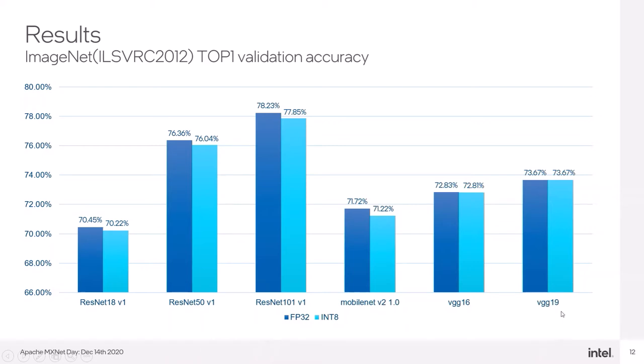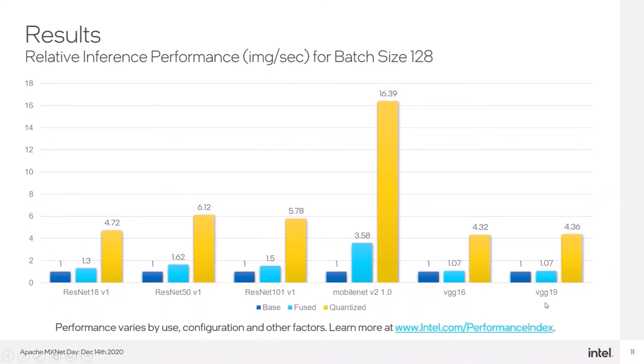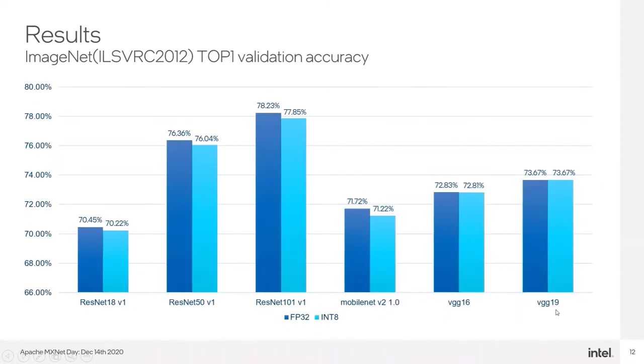On the other hand, VGG-19 has no accuracy loss at all after the quantization, and it's still over 4 times faster than the baseline model.